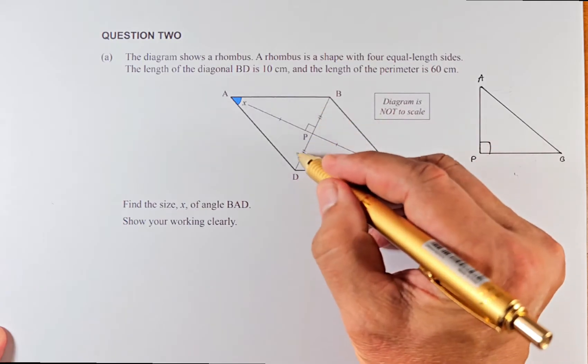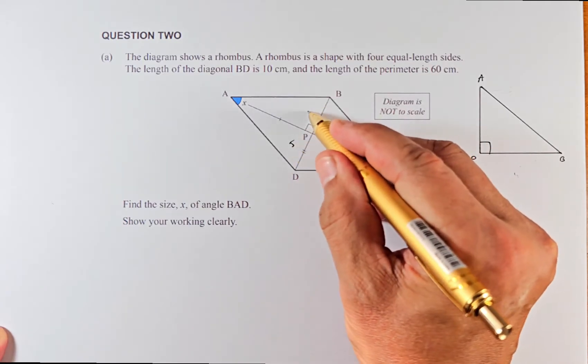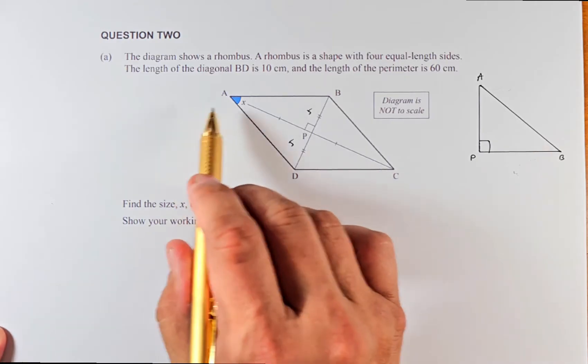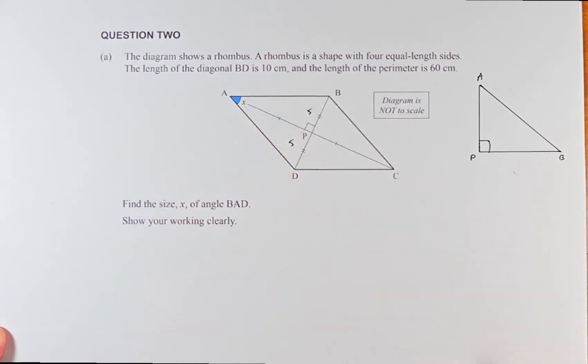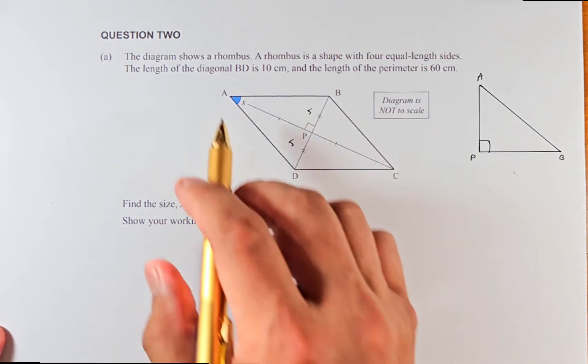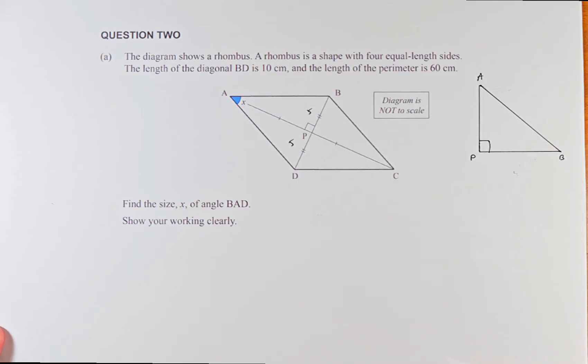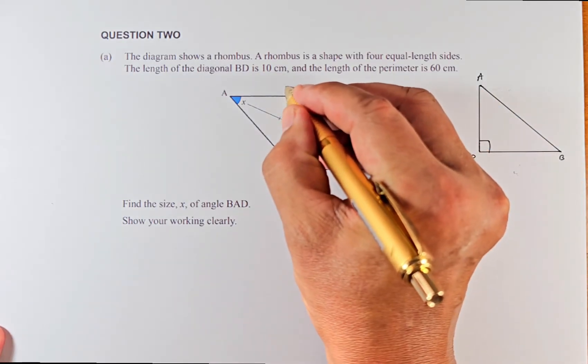This half of it is going to be 5 each, and the length of the perimeter is 60. Because they are all of the same size, we divide by 4, so it's going to be 15 cm for each length.